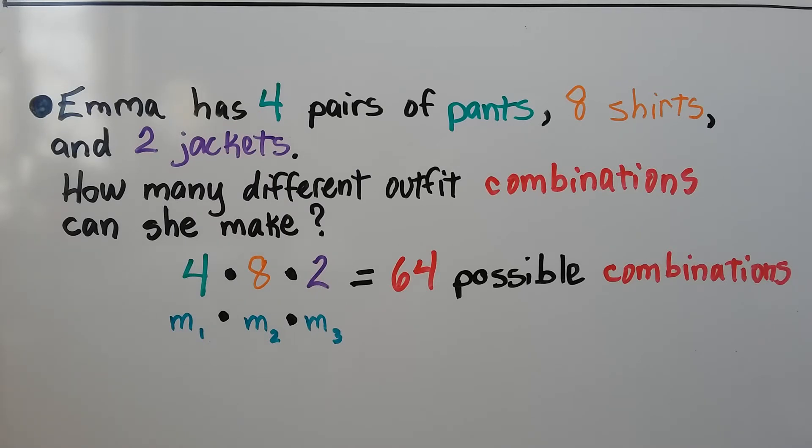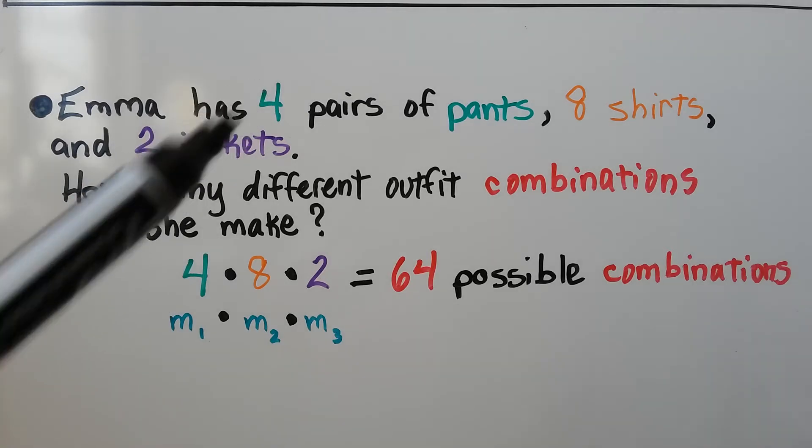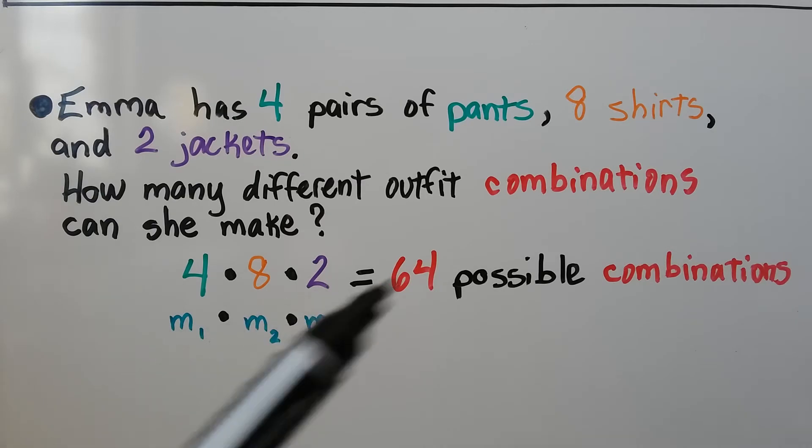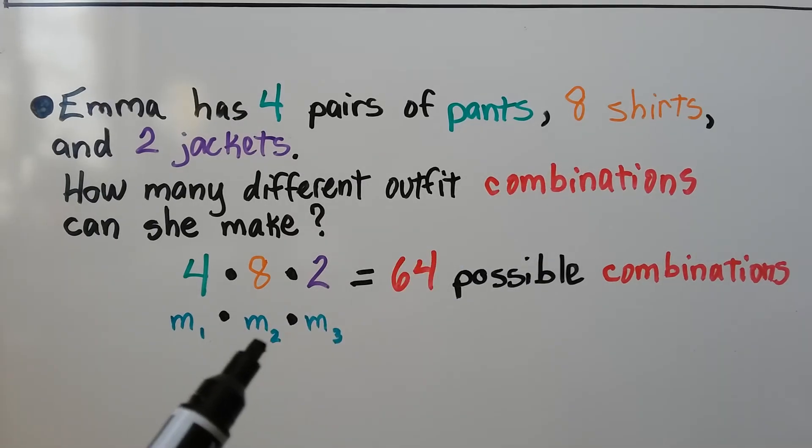It's like this. Emma has four pairs of pants, eight shirts, and two jackets. So how many different outfit combinations can she make? We do the 4 for our m sub 1, the 8 for our m sub 2, and the two jackets for our m sub 3, and we multiply them together. 4 times 8 is 32, times 2 is 64 possible combinations.